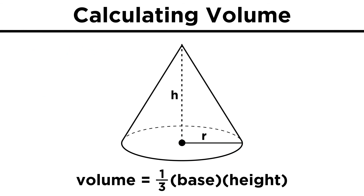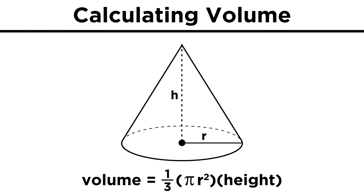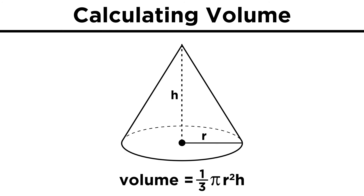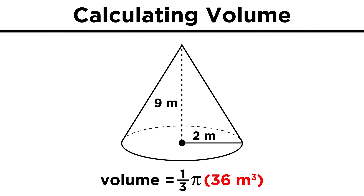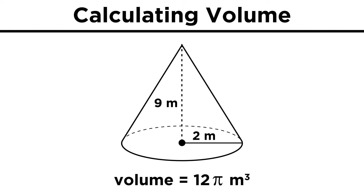Cones work just like pyramids. Again, it will be one-third base times height, except that here the area of the base is given by pi r squared, so we get one-third pi r squared h. If we have two for r and nine for h, we get four pi times nine is thirty-six, times a third is twelve cubic meters.